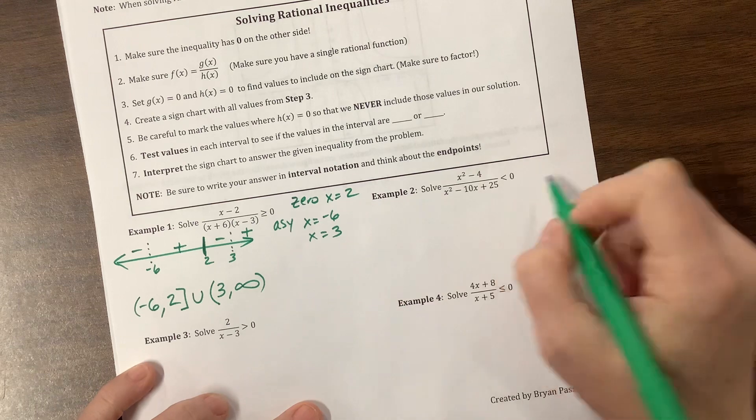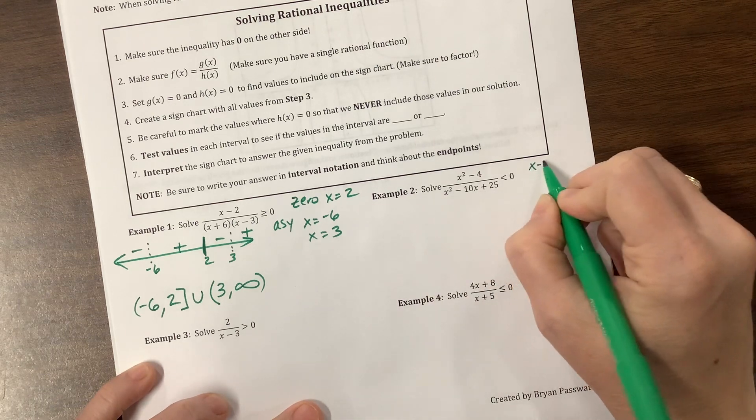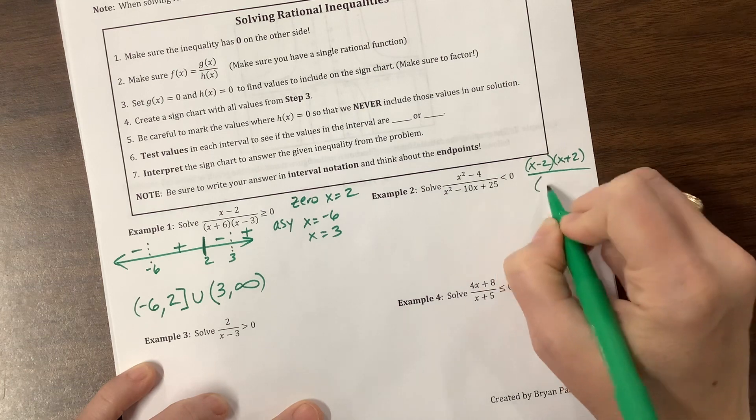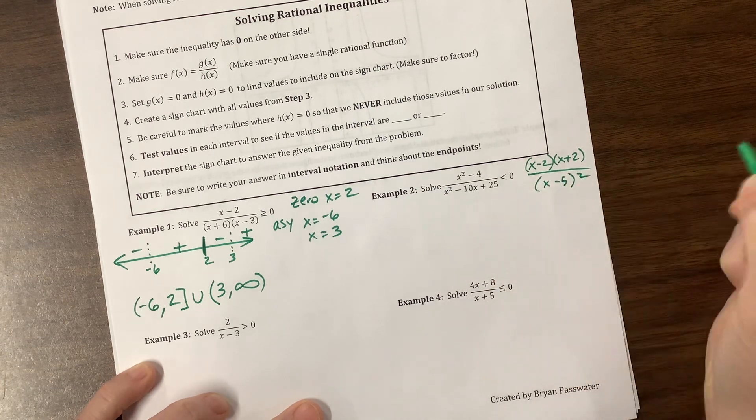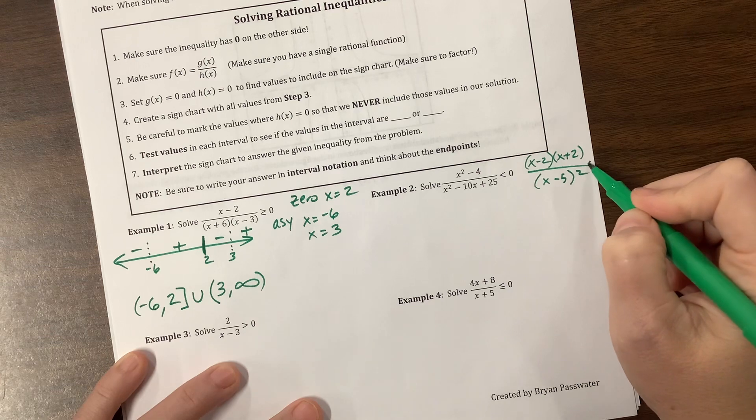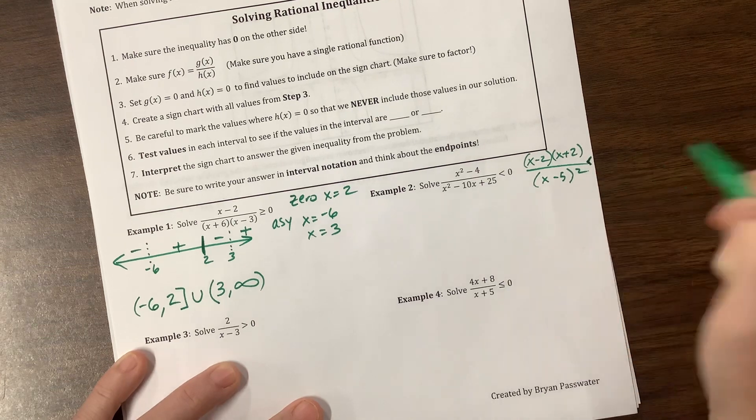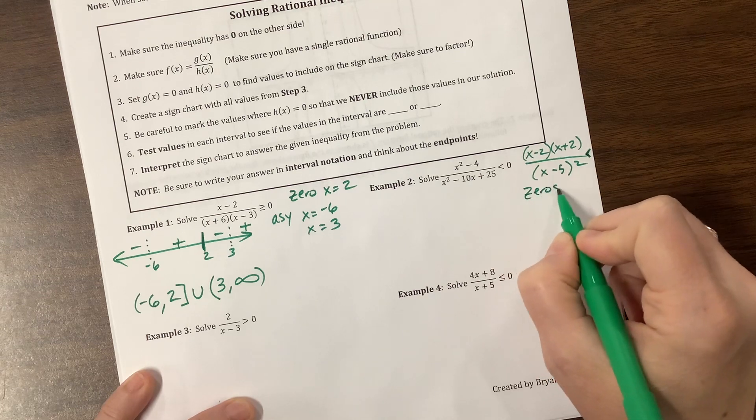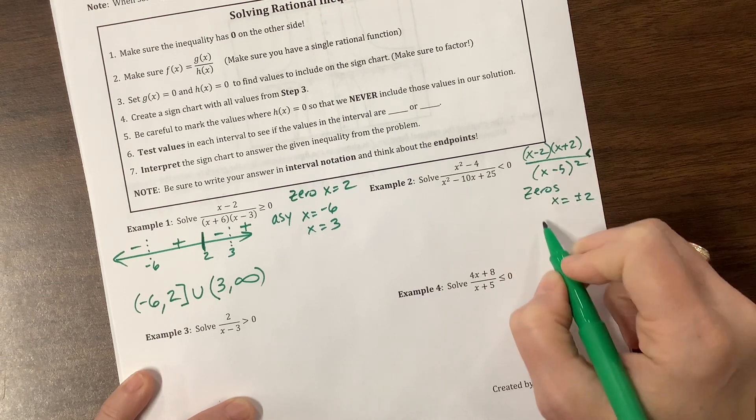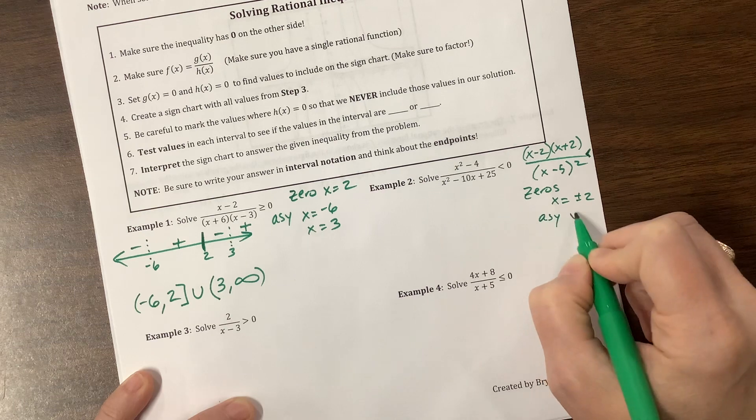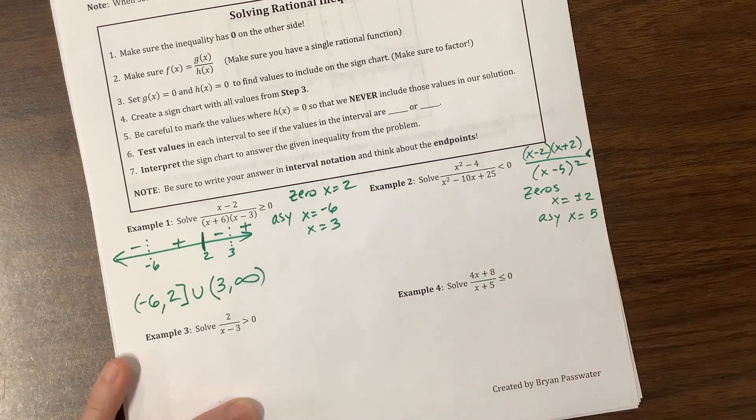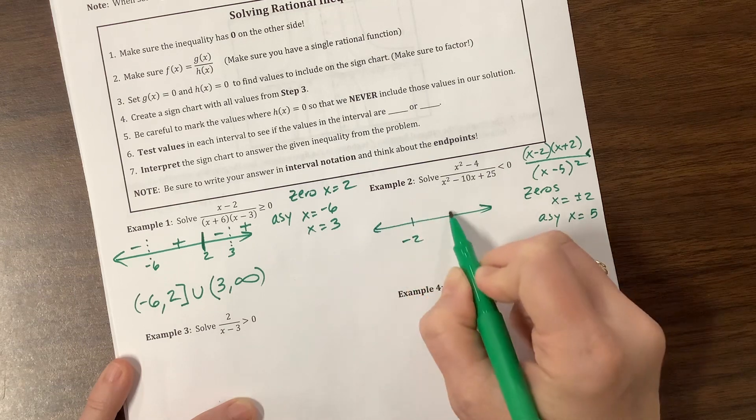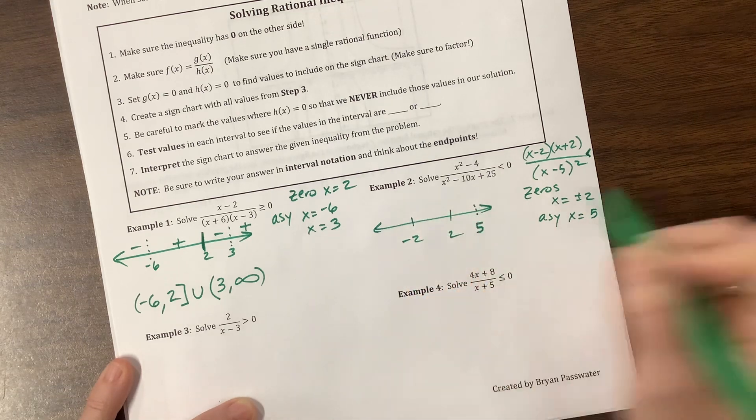Okay, let's look at the next one here. This can be factored to x minus 2 times x plus 2 over x minus 5 squared. So we have, and then it's less than 0. Sorry, do you see that? Less than, okay, I ran out of space. But I have zeros, x equals plus or minus 2, and I have an asymptote at x equals 5. So we'll draw this out. Zeros at a negative 2 and a positive 2 and an asymptote dot, dot, dot at positive 5.